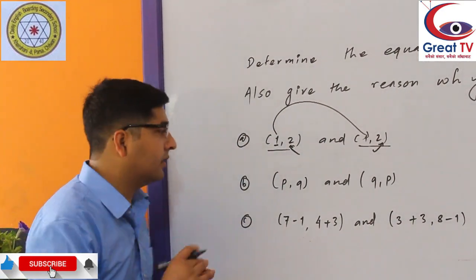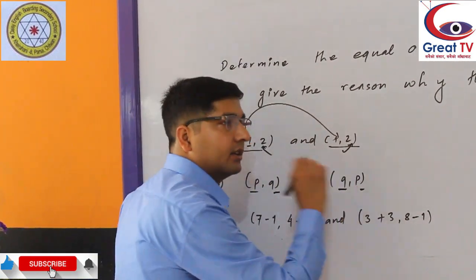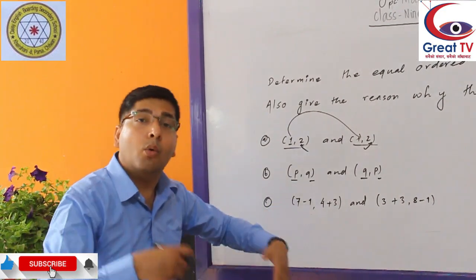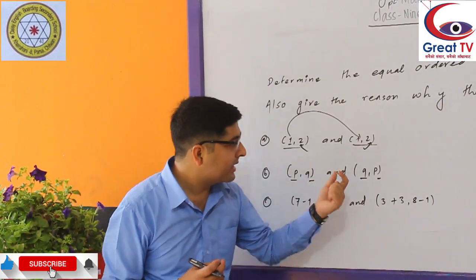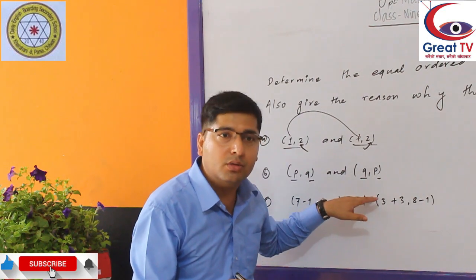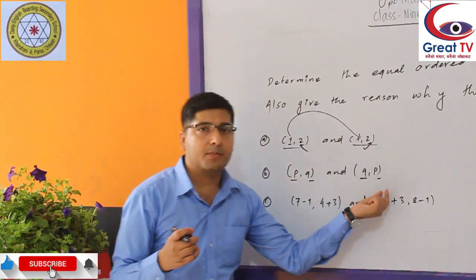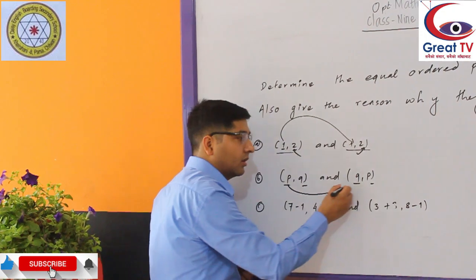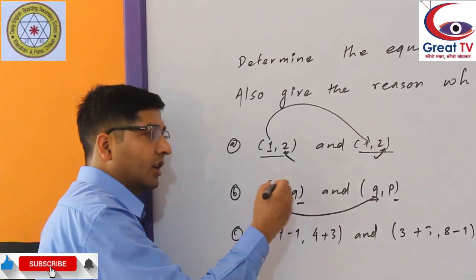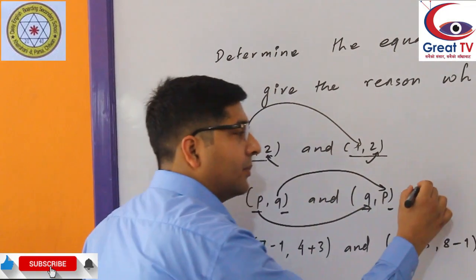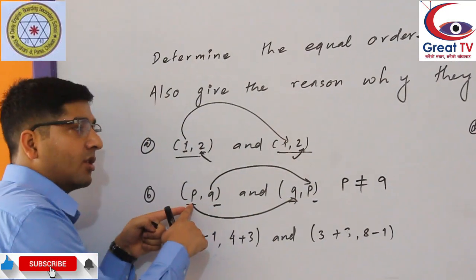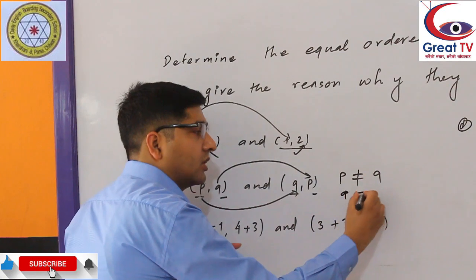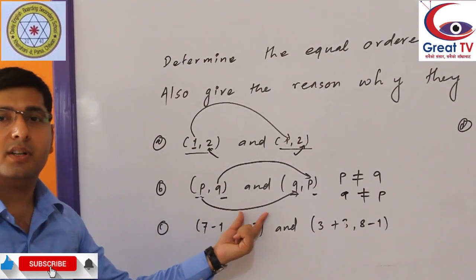Second question: (P, Q) as the first ordered pair and (Q, P) as the second ordered pair. The x-component of the first is P and y-component is Q. The x-component of the second is Q and y-component is P. If P does not equal Q, then x-component P does not equal x-component Q, and y-component Q does not equal y-component P. So these two ordered pairs are not equal.